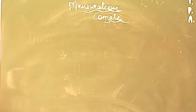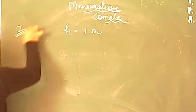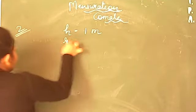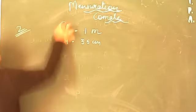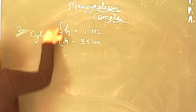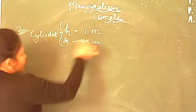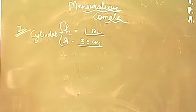Question number 2 is related to a cylinder — a right circular cylinder. It has height H = 1 meter and radius = 35 centimeters. For a cylinder, both height and radius must be known, and both are given, but height is in meters and radius is in centimeters.